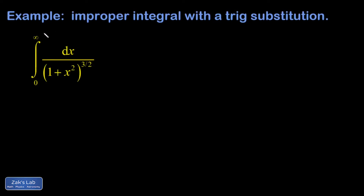Let's integrate this thing. The upper limit here is infinity, which makes this an improper integral. In calculus courses you're supposed to treat this with a limit, but as a physicist I kind of think of infinity as a number unless it causes some kind of problem. In this case it's a very well-behaved infinity — there are no complications. So I want to simplify this denominator.